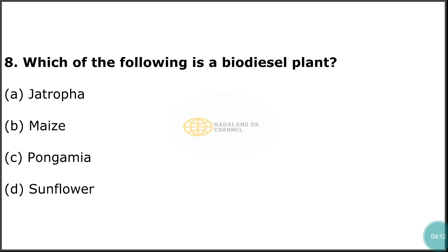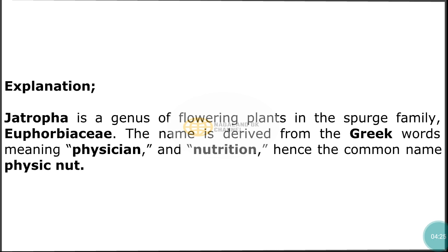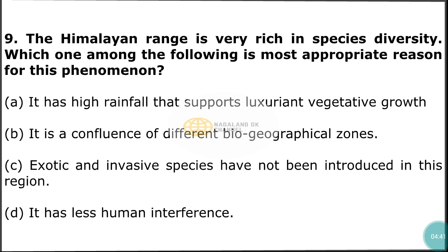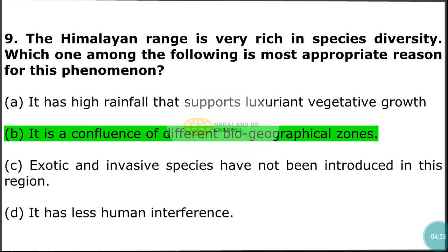Question number 8: Which of the following is a biodiesel plant? The correct answer is option A — Jatropha. Jatropha is a genus of flowering plants in the spurge family Euphorbiaceae. The name is derived from Greek words meaning physician and nutrition, hence the common name physic nut. Question number 9: The Himalayan range is very rich in species diversity. Which one among the following is the most appropriate reason for this phenomenon? The correct answer is option B — it is a confluence of different biogeographical zones.